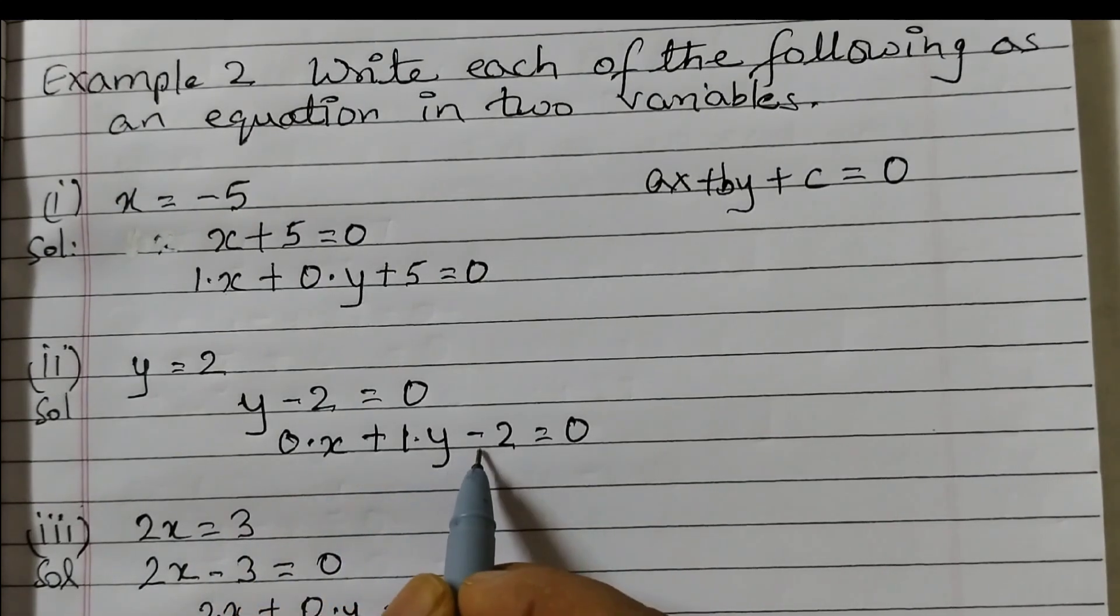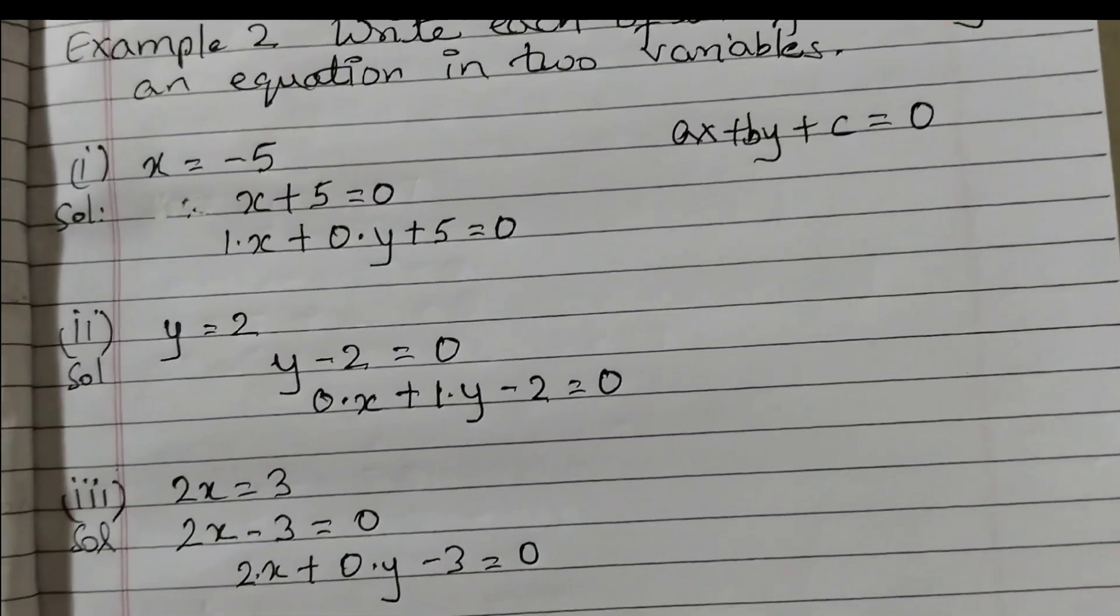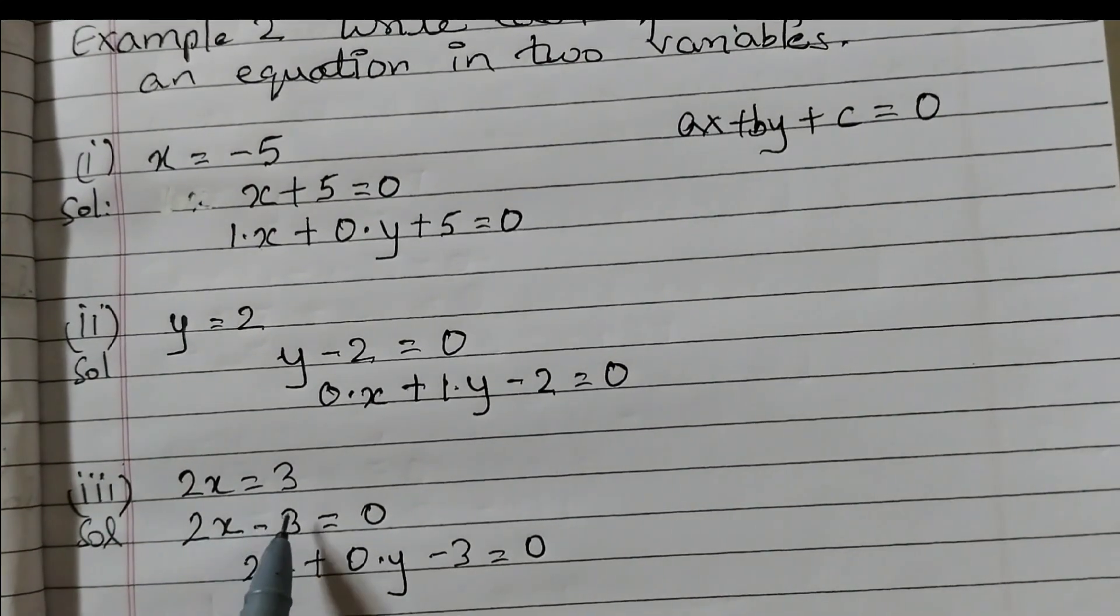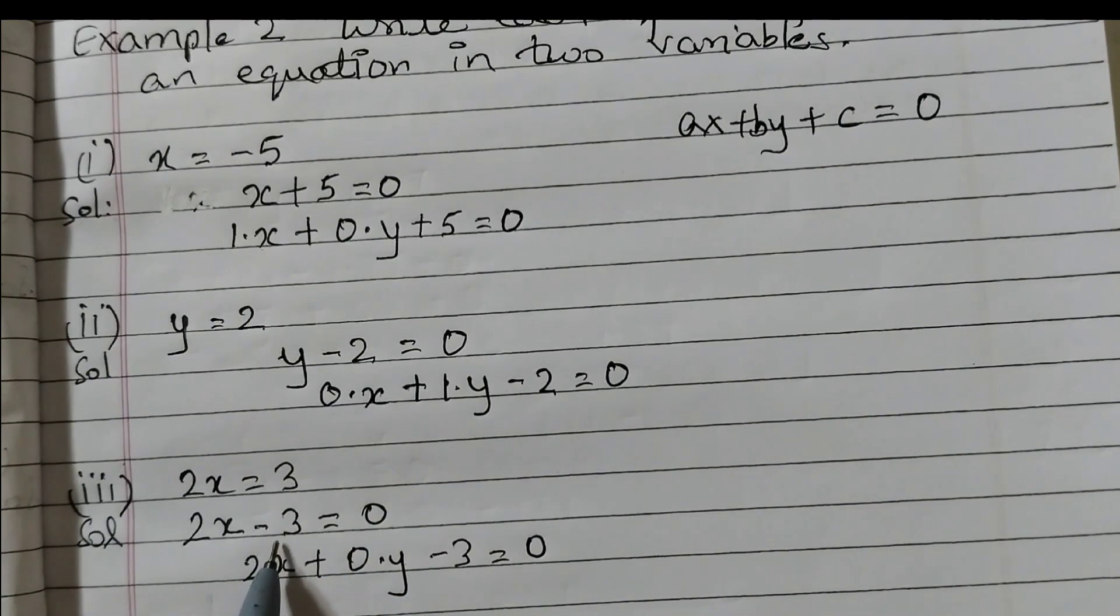Third one is 2x equals to 3, so get 3 on the left hand side, 2x minus 3 is equal to 0 and here the y term is missing.